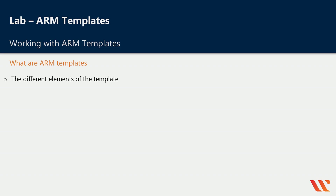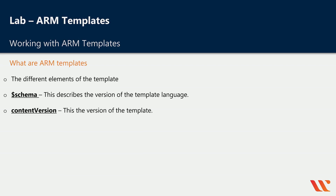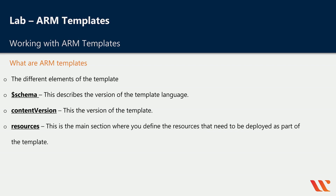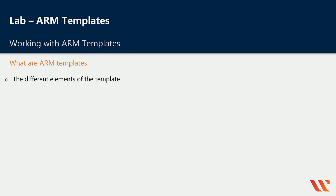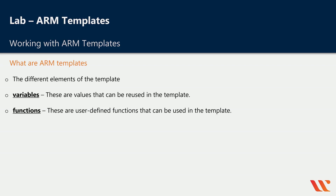The different elements of a template are: first, you have the schema, which describes the version of the template language being used. You then have the content version — if you have different versions of your template, you can mention the version number there. You then have the resources section, which is the main section where you define the resources to be deployed. You have the parameter section for values that customize the deployment, the variable section for values used in the template, functions for user-defined functions, and the output section for values returned after deployment.